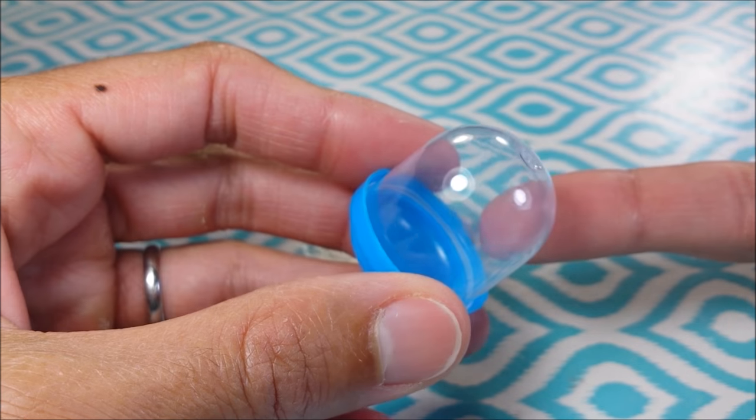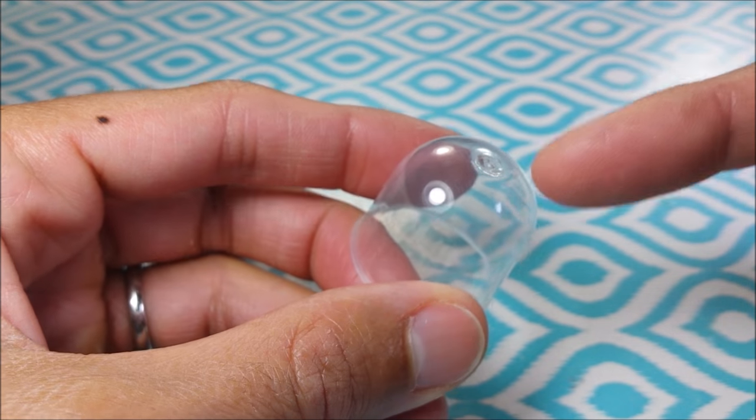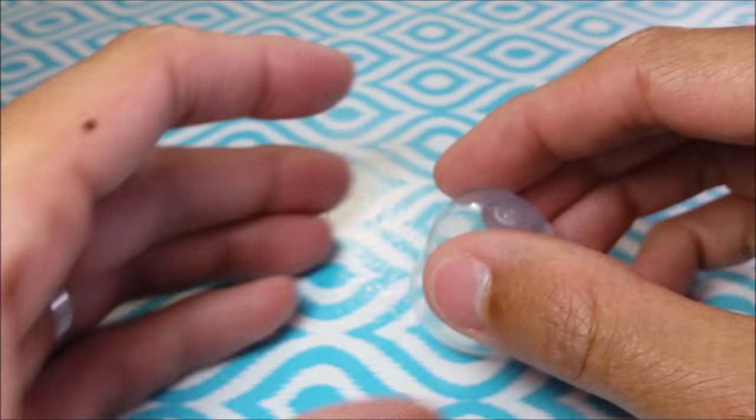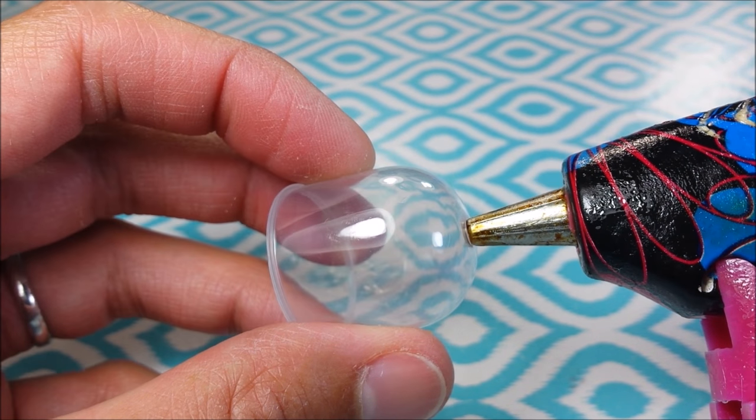So guys, I start with one of these little toy containers that you can get from the 25 cent machines. I remove my top and I'm just using my hot glue gun to create a hole here in the top.